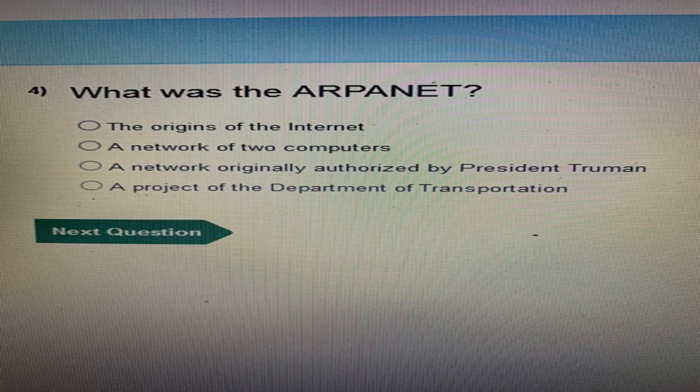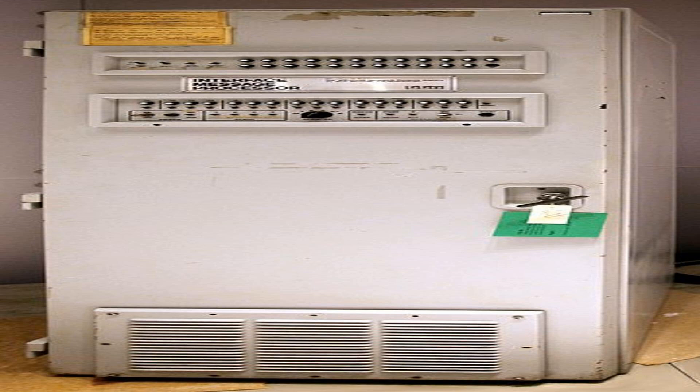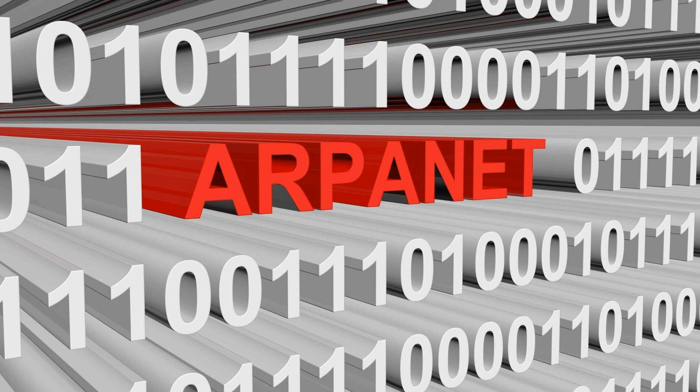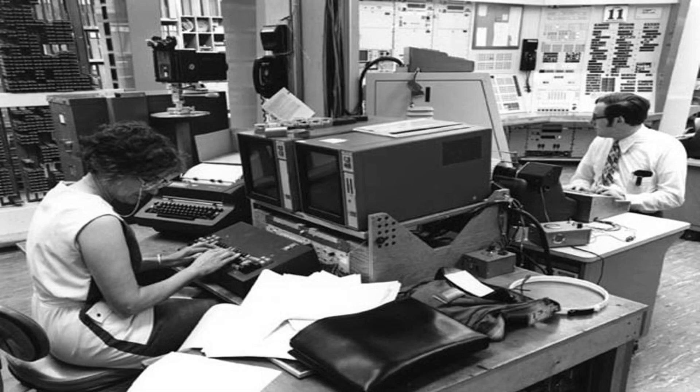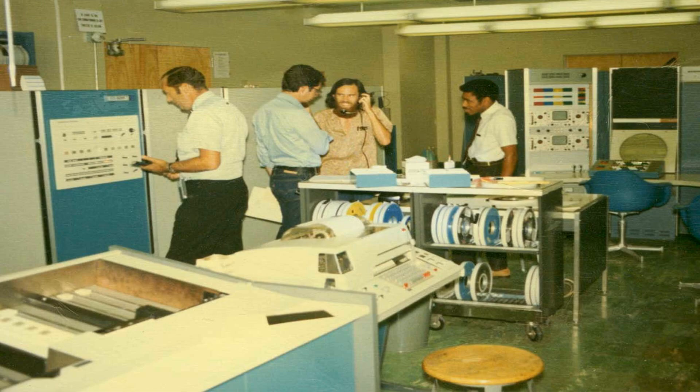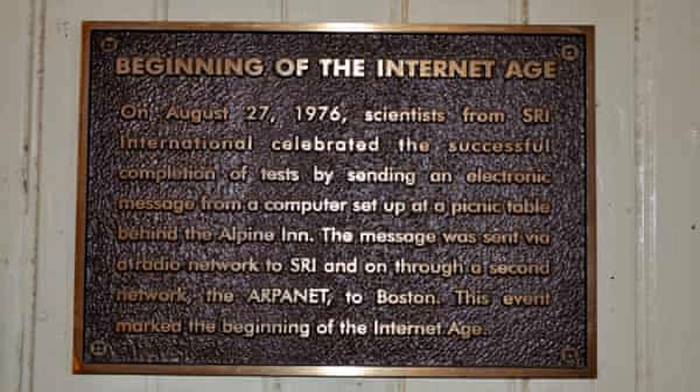The history of the internet can be traced back to the origins of the ARPANET. In the late 1960s, the United States Department of Defense created the Advanced Research Projects Agency Network, or ARPANET for short. The purpose of the ARPANET was to develop a communication system that would allow researchers and scientists in different locations to share information and resources. The ARPANET was funded by the U.S. government and was developed as a joint project between many different institutions, including universities and research centers.